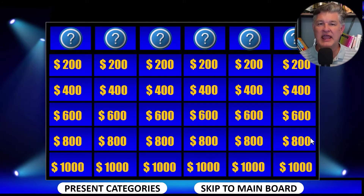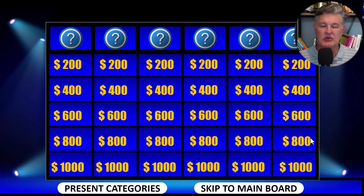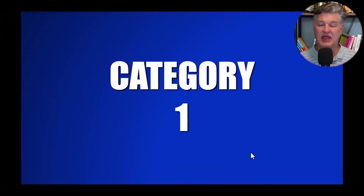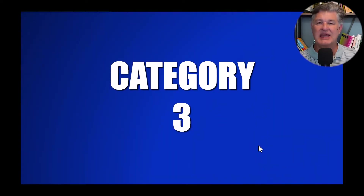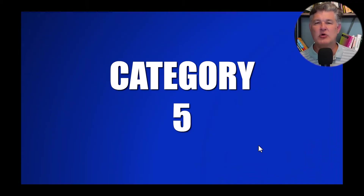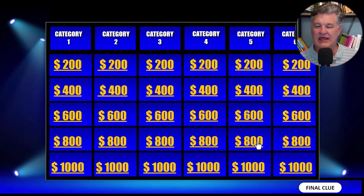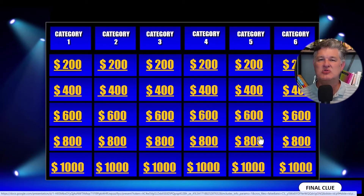On this board, you'll notice the categories are not revealed yet. That's because a lot of times I like to do a kind of a big production out of the category. So what I'll do is click on Present Categories, and then I can say, all right, here are the categories — Category 1. And as you click, it's going to bring each category up. Of course, these will have whatever your categories are once you update this. And then after Category 6, it's going to go to the main board.